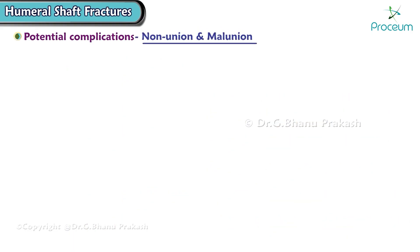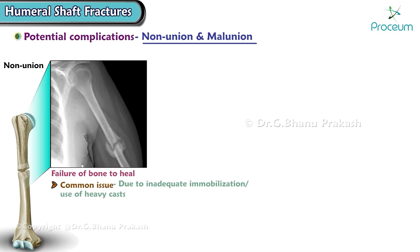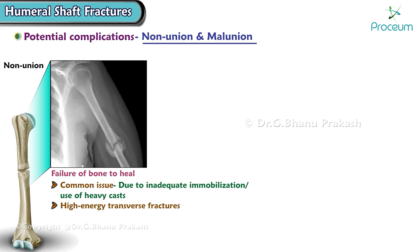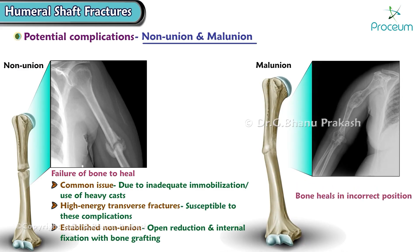Nonunion — the failure of the bone to heal — is a common issue in mid-shaft fractures, often due to inadequate immobilization or use of a heavy cast. High-energy transverse fractures are particularly susceptible. In cases of established nonunion, open reduction and internal fixation with bone grafting may be necessary. Malunion, when the bone heals in an incorrect position, can also occur, potentially leading to functional issues.